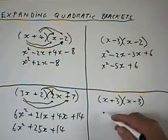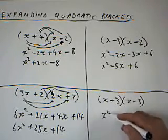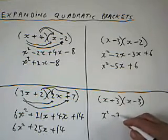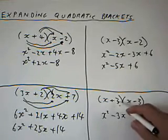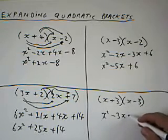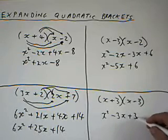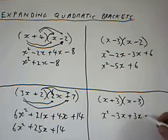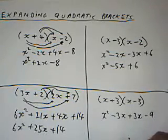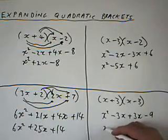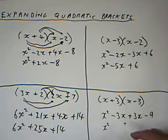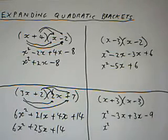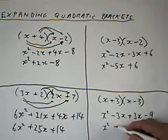x times x, x squared. x times minus 3, minus 3x. 3 times x, plus 3x. Plus 3 times minus 3, minus 9. That simplifies to x squared. These things disappear, minus 3x plus 3x. That simplifies to x squared minus 9.